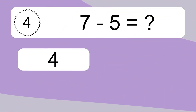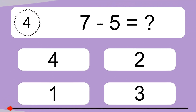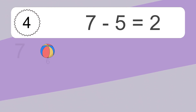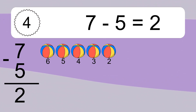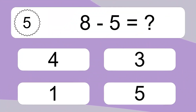7 minus 5 equals what? 7 minus 5 equals 2. Let's count it. 6, 5, 4, 3, 2.